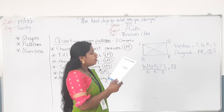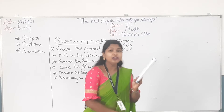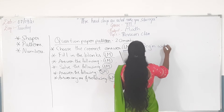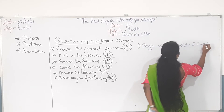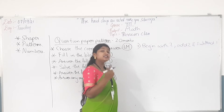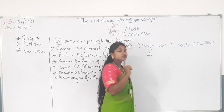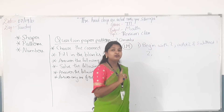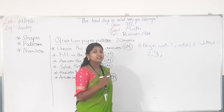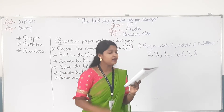27th question: form a pattern by following the given rule. For example, begin with 2, add 2 and subtract 1. The first number is 2. Next, add 2 to get 4, then subtract 1 to get 3. Then 3 plus 2 is 5, minus 1 is 4. Then 5, 6, 7, 8, and so on. This is how we form a pattern using the rule.